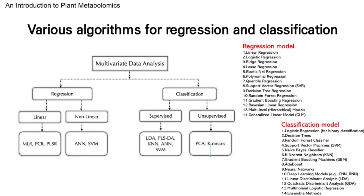Moving on to unsupervised learning, we explore data without predefined categories. Tools like PCA assist in identifying similarities among fruits by simplifying complex features. Additionally, k-means clustering facilitates the organization of a mixed fruit bowl into cohesive groups, thereby enhancing our understanding of the data without the need for predefined categories.